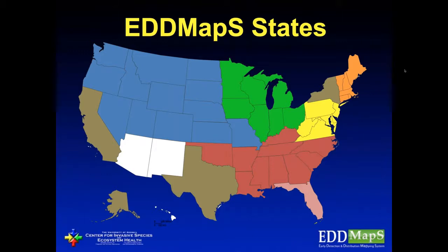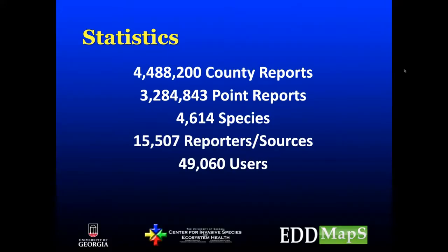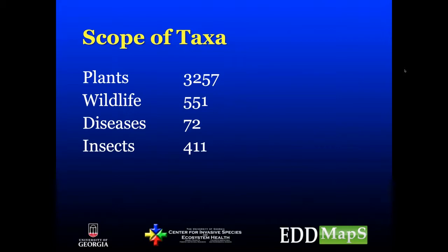EDMAPS is broken into different projects, with I've Got One being the Florida project. Overall, EDMAPS has over four million records — about one million at the county level only, and about 3.2 million with a latitude and longitude associated. That's covering 4,600 species from 15,000 different sources or reporters, with about 49,000 total users who have signed up for EDMAPS accounts. The scope of the data nationally is still very heavy on the plant side, but in Florida we do have a lot of wildlife reports coming in.